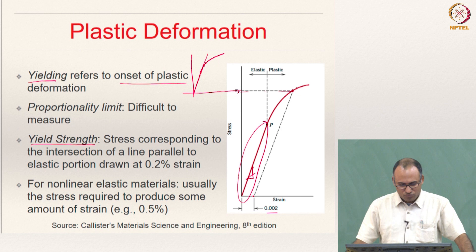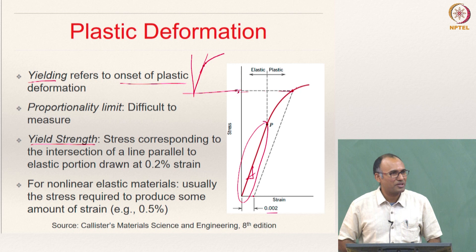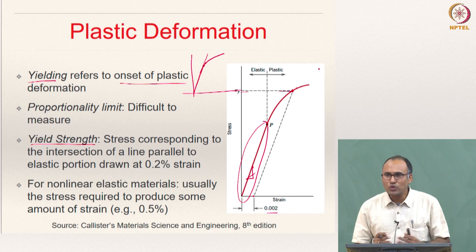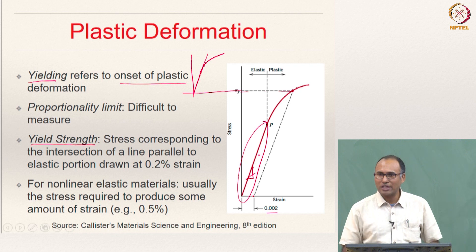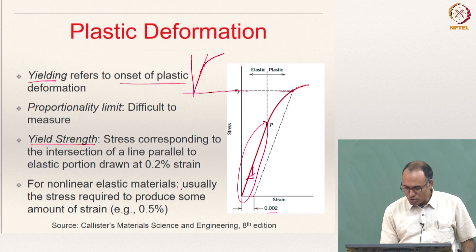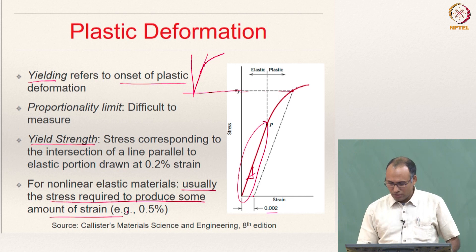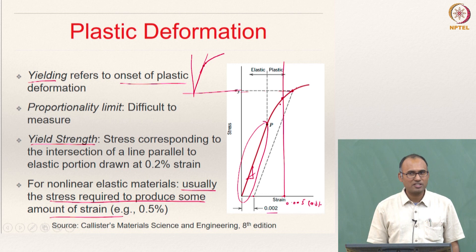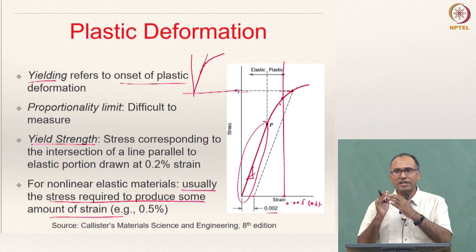For nonlinear elastic materials, this 0.2 percent offset method works well for linear elastic material because you know what the slope is. But for a nonlinear elastic material the slope is changing, so there is ambiguity in which slope to take. Hence for nonlinear elastic materials, the yield strength is usually defined as the stress required to produce 0.5 percent strain — that is 0.005. You draw a straight line at that strain value, and that gives you the yield strength for nonlinear elastic material. This is the standard one needs to use.